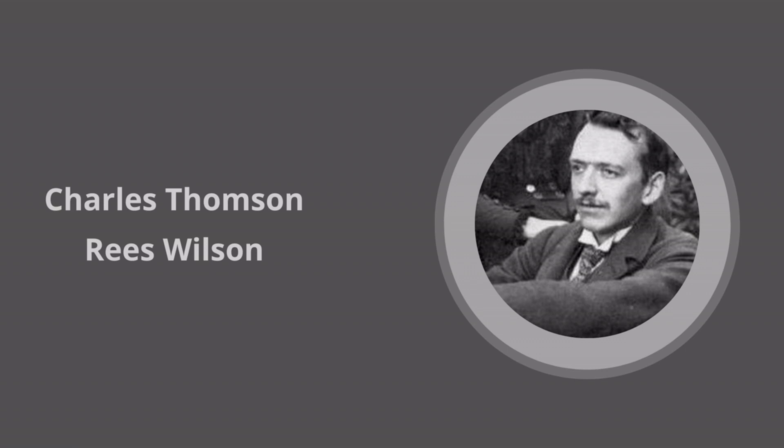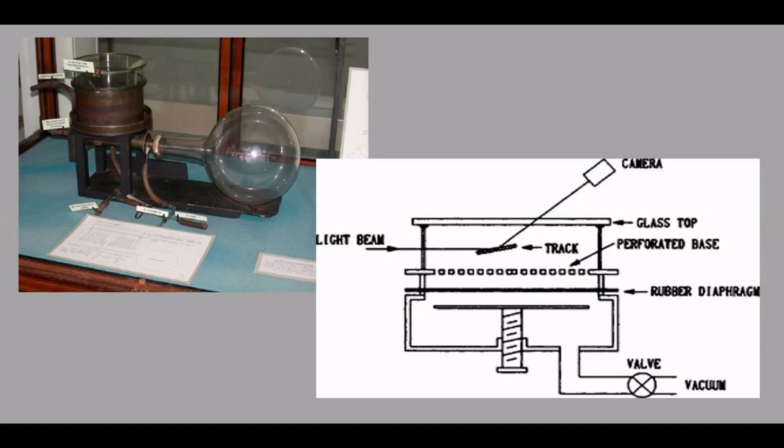But who was Wilson? Charles Thomson Rees Wilson was a British physicist who discovered and built the first prototype of a cloud chamber. This year it has been exactly 100 years since he succeeded in visualizing electrons for the first time. Inspired by this and available information, we began the construction of our own model.